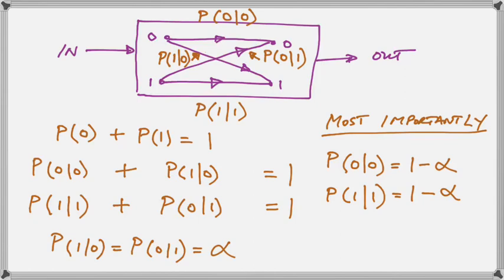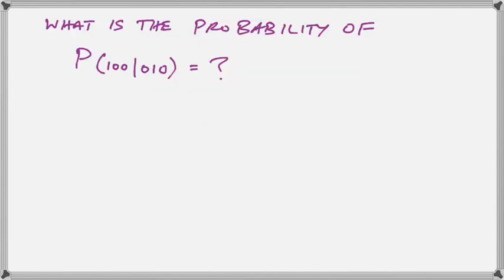The probability of getting a 0 when we put in a 0 is actually 1 minus alpha and the probability of getting a 1 out when we put a 1 in is 1 minus alpha. We have all the information we need now to answer the following question.